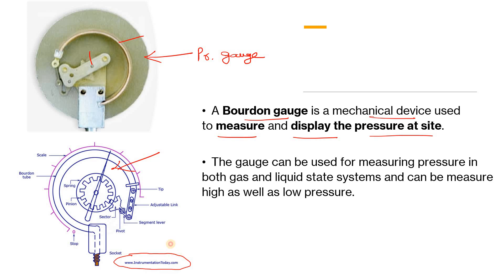The Bourdon gauge is used to measure the pressure of a gas stream or liquid stream. For acid or special-purpose applications we use diaphragm-type gauges, but for water and gas cases you can simply use the Bourdon gauge due to its simplicity. You can measure pressure as low as vacuum and as high as thousands of PSI — up to 3,000 to 4,000 bar. You also see Bourdon gauges in metros, buses, and most household activities.